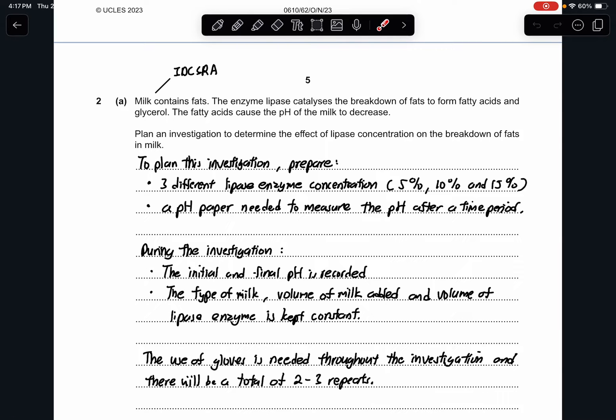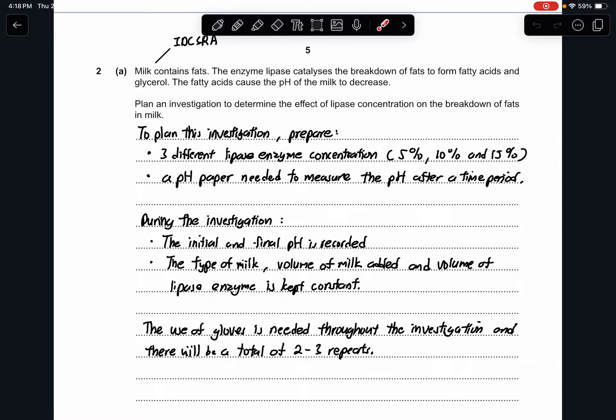This time I have written this in point form so it's easy to see what I have chosen. But usually you can write either in point form or in paragraph form. My answer is: to plan this investigation, prepare 3 different lipase enzyme concentrations. I list as 5%, 10%, and 15%. I will also prepare a pH paper which I need to measure the pH after a period of time. And during the investigation, I will be recording the initial and final pH. And the type of milk, the volume of milk being added, and the volume of lipase enzyme will be my constant variable.